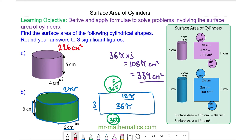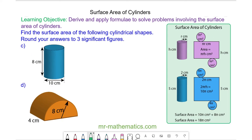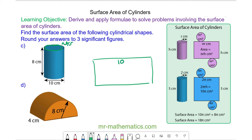Let's try a couple more questions. For question C, we have our rectangle, which is formed when we unravel the curved surface area. The width of our rectangle is 2πr. The radius is 5cm, so the width is 10π.